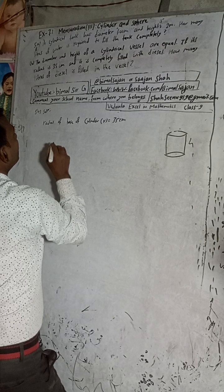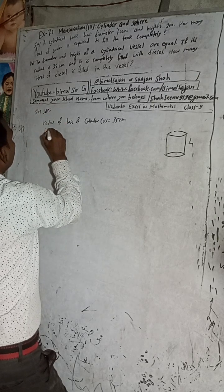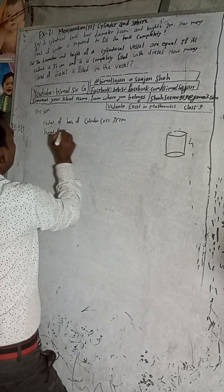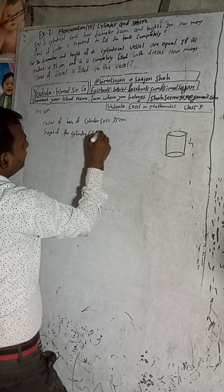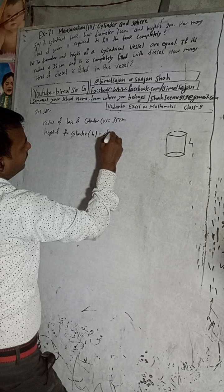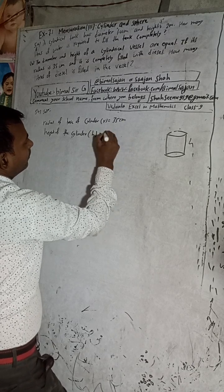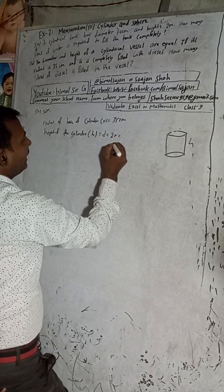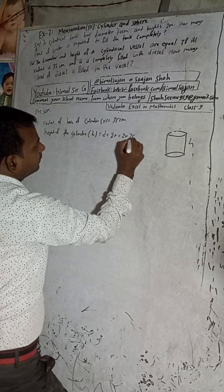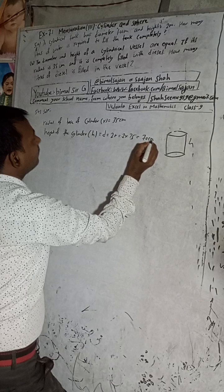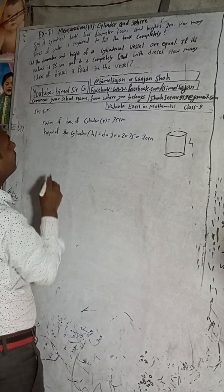Since the diameter and height are equal, the height of the cylinder equals the diameter. The diameter is 2 times the radius, which is 2 times 35, giving us a height of 70 cm.